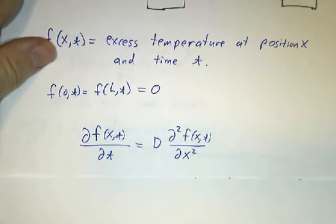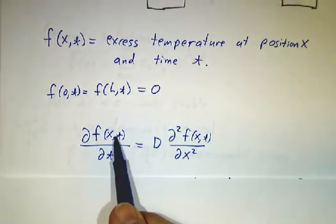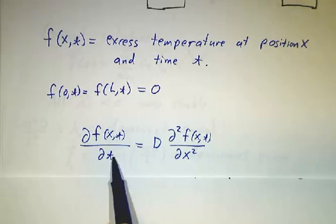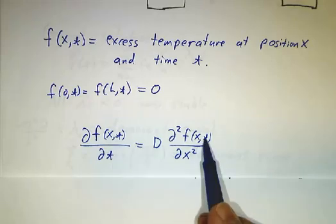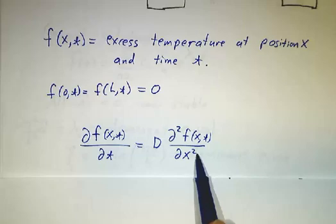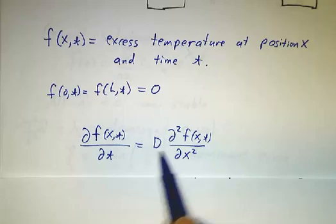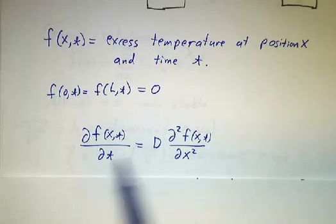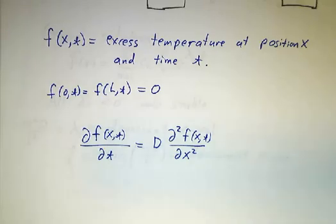The heat equation tells you that the derivative of the temperature at any given point with respect to time is proportional to the second derivative with respect to position. D is just a constant. This is the same equation that governs diffusion as well. Now we're not going to derive the heat equation, but we are going to see how to solve it.